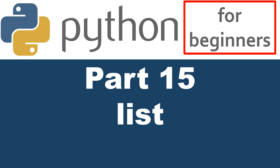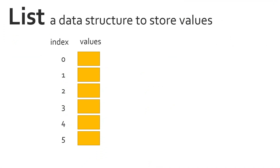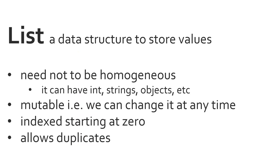In this video I'm going to talk about Python lists. A list is a data structure that you can use to store values. What we're interested in when it comes to lists is the place where values are stored and also the index — the index is like the address of a location where you store a value. The index of the first location would be zero, the next would be one, and so on. Inside each location you can store anything: an integer, a string, a boolean, or even objects. Some key characteristics of lists: they do not need to be homogeneous, you can change them at any time, they are zero-indexed, and they allow duplicates.